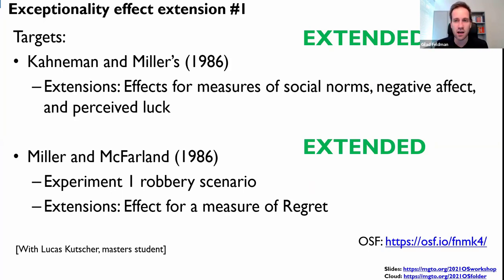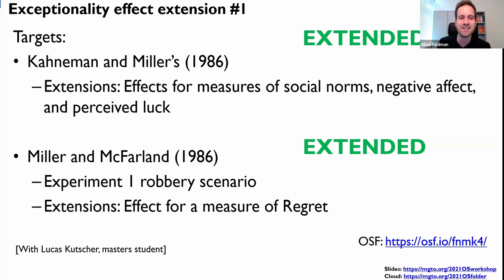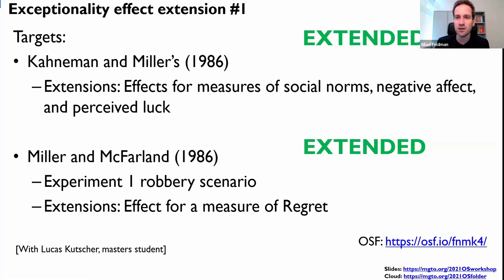The amazing thing is that Lucas added the regret measure and we found support for it — but we did not find support for compensation. When we contacted Dale Miller — who is very active — and told him we ran exactly what he ran in the 1980s, trying both compensation and regret, compensation didn't work but regret did, he said: yes, I remember many times compensation was generally a weak effect and sometimes it didn't work. I asked him: where are those null findings? And he said journals don't accept null findings. So from the 1980s until 2017, many people probably tried compensation, put the null results in their file drawer, and never communicated it.